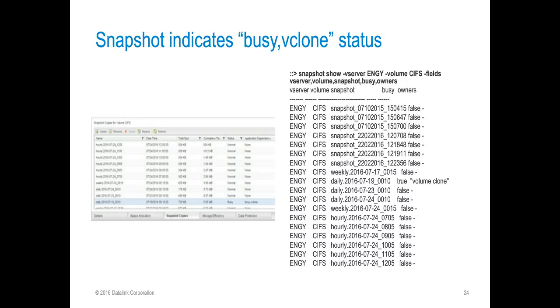On the right, we have the snapshot show output command for the same volume, utilizing the fields flag to customize our output, which indicates the snapshot is in a volume-cloned state. This indicates that the snapshot is currently being tied up by a flex-clone volume.